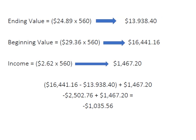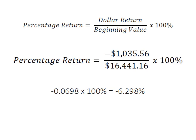and income will be the dividend per share times the shares held. Our ending value was $24.89 times 560 shares, and our beginning value was $29.36 times 560 shares, plus the $2.62 dividend. So originally it was worth $16,441.16; unfortunately it went down to $13,938.40. We had a capital loss of $2,502.76, but we recaptured some of that in dividend income, leaving us with a dollar return of negative $1,035.56.